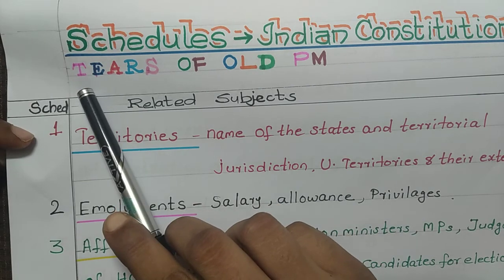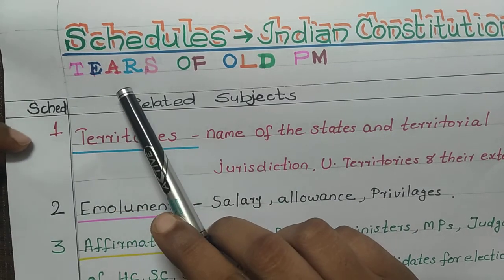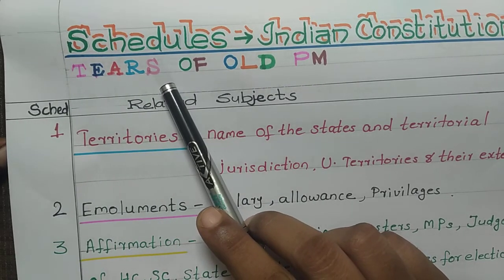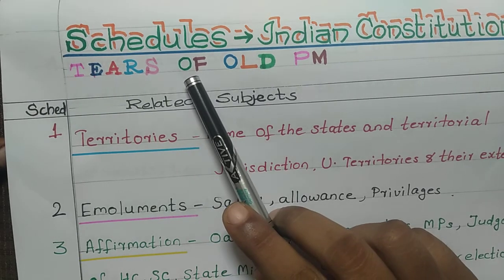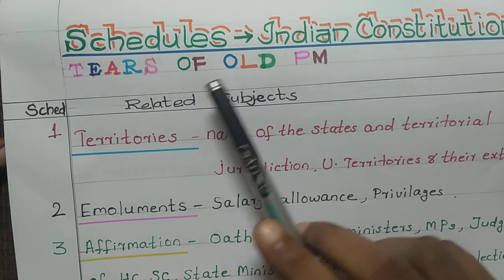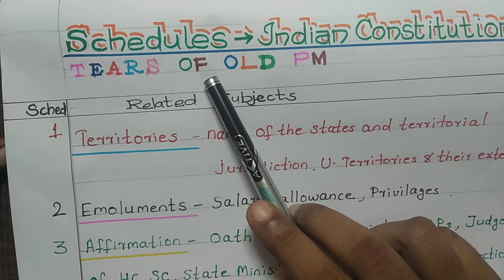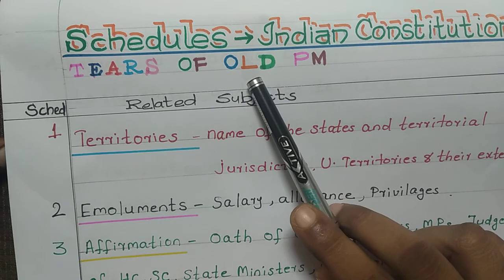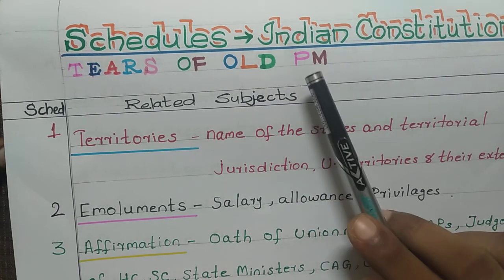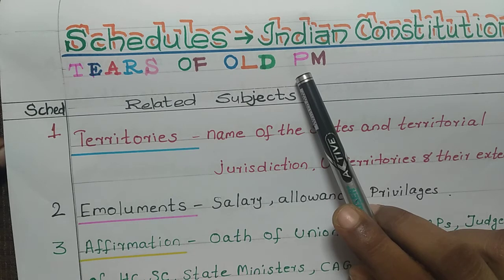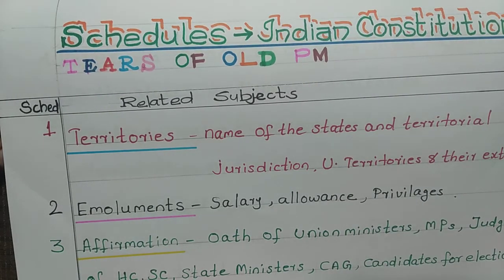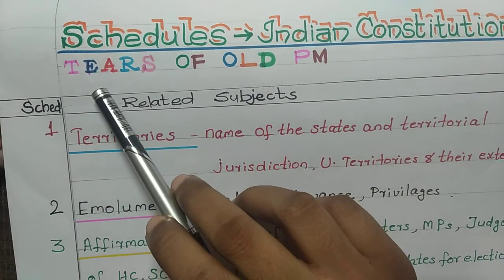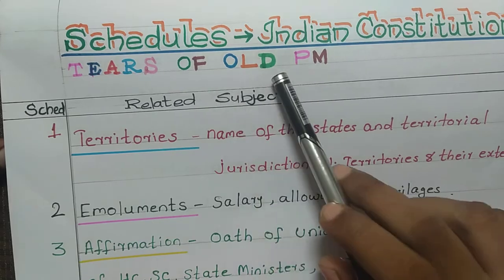Let's recap the 12 schedules once again using 'Tears of Old PM': T for territories, E for emoluments, A for affirmation, R for Rajya Sabha, S for scheduled areas, O for other areas, F for federal system, O for official languages, L for land reforms, D for defection, P for panchayats, and M for municipalities. Our code is Tears of Old PM.